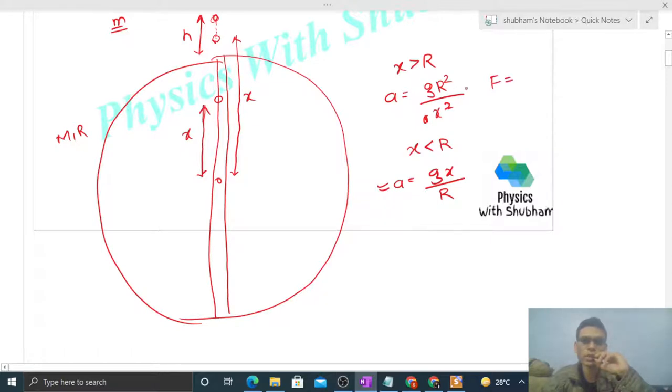At some distance x, when the particle is inside the Earth's surface, this will be the value of acceleration. You can also find the force. The gravitational force is mass times acceleration, so small m g R squared divided by x squared outside, and m g x by capital R inside.